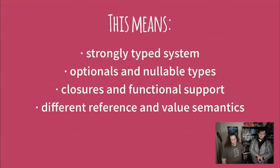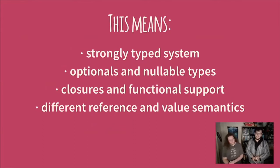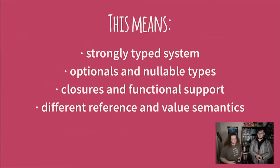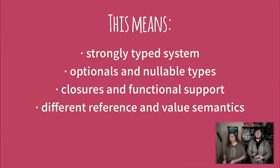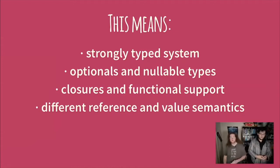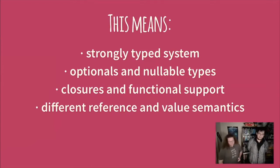Swift has a strongly typed system, which means your types are very strongly enforced. It has optionals and nullable types, which make it safe to do all sorts of things with variables. It has closures and functional support, making it semi-functional — functional enough for people who like functional programming. And it has different reference and value semantics, so you can copy or refer to structs and classes depending on what you need.